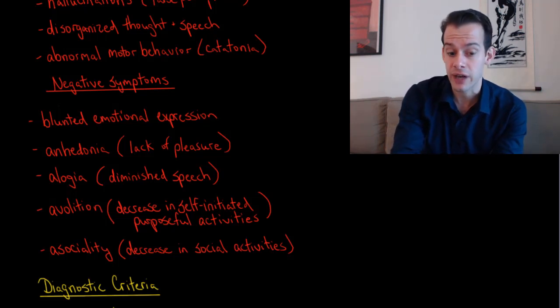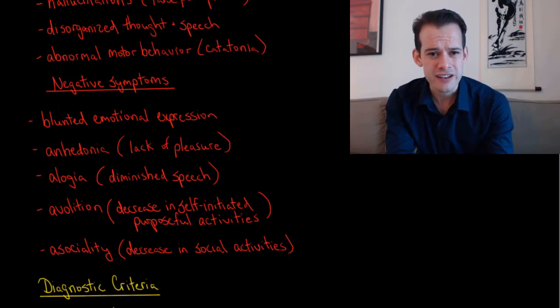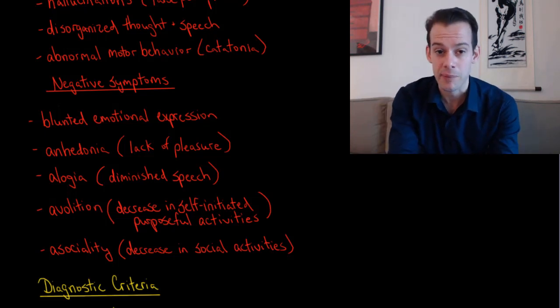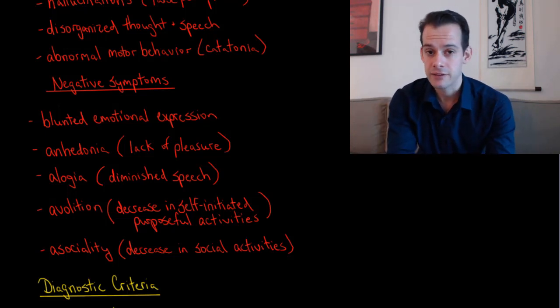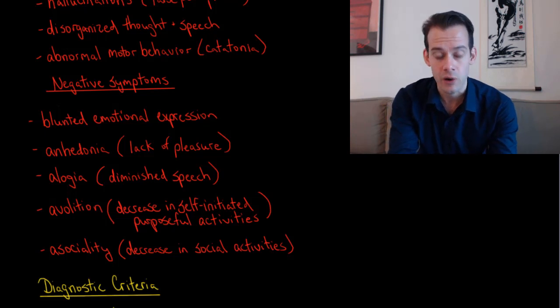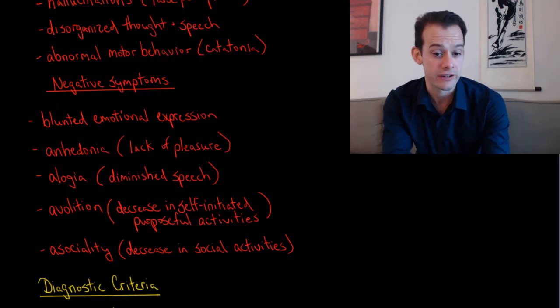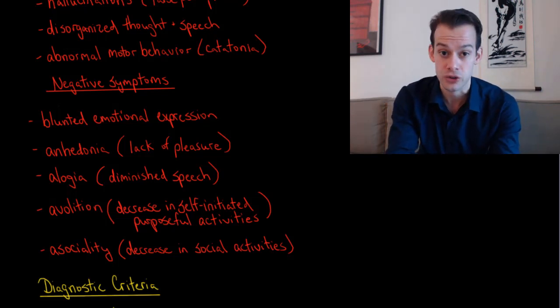Then we see avolition and this refers to a reduced sense of will, a reduced sense of initiating behavior, a decrease in self-initiated purposeful activities. The patient might do things if instructed or encouraged to do so but on their own they may not initiate any of these behaviors. Lastly we see asociality which refers to a decrease in social activities.